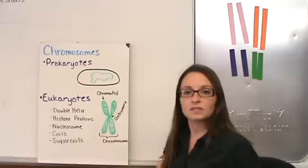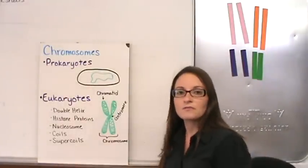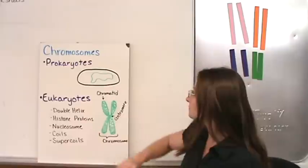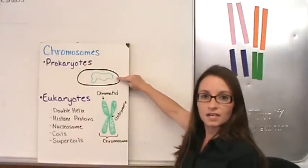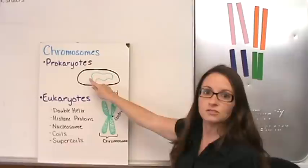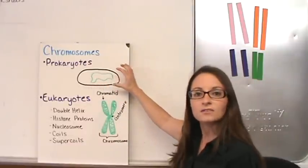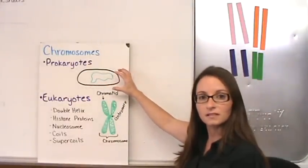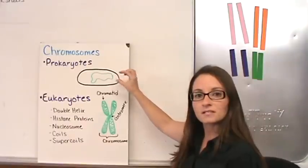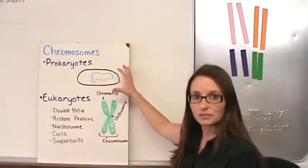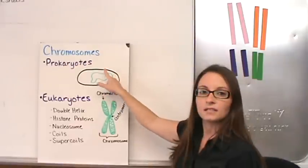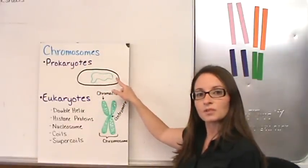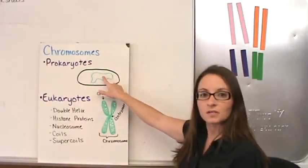Let's start with the chromosomes. Prokaryotic chromosomes, very simple. Single strand of DNA, usually in a circular fashion, and it's held within the cytoplasm of the cell. A prokaryotic cell does not have a nucleus. So the DNA is in one circular chromosome within the cytoplasm of the cell.